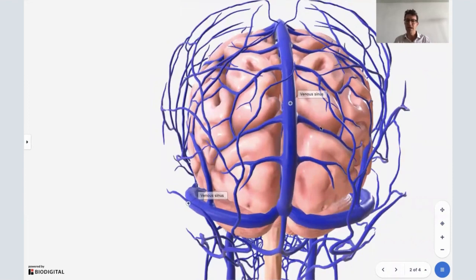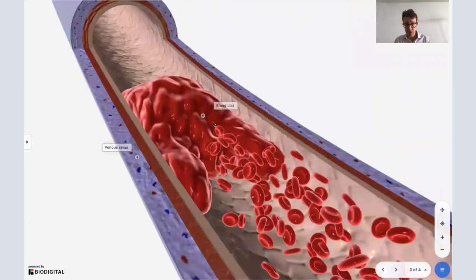So what happens inside these venous sinuses? Well, if we zoom into one of them, here's a venous sinus right here. What happens is a blood clot occurs. And so cerebral, meaning brain, venous sinus, meaning this vein-like structure, thrombosis, that's just a fancy word for a blood clot.